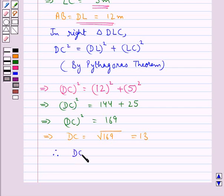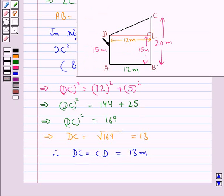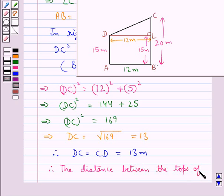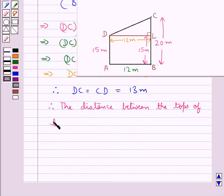Therefore we get DC, or you can say CD, is equal to 13 meters, which is the distance between the tops of the two poles.